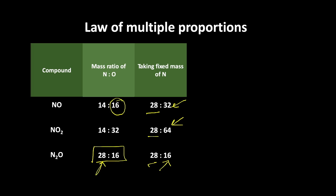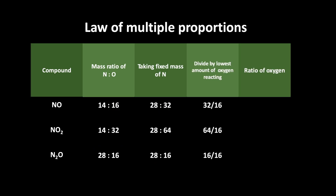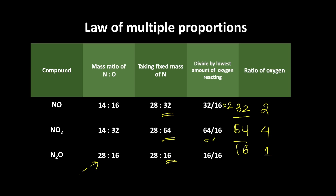Now we can see that the mass of nitrogen has been fixed at 28. Let's check whether the masses of oxygen give a simple whole number ratio. The masses of oxygen are 32, 64, and 16. Dividing by the smallest value — 16 — we get 32:64:16, which simplifies to 2 is to 4 is to 1. This is indeed a simple whole number ratio.